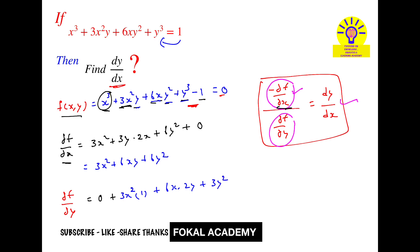So it becomes 3x squared plus 6x times 2 is 12xy plus 3y square.